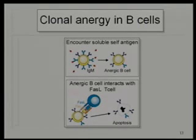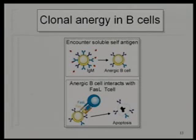These anergic cells also up-regulate their Fas molecule. There are lots of cells that have Fas ligand, and that Fas–Fas ligand interaction is going to induce apoptosis. So first anergy, and then apoptosis.